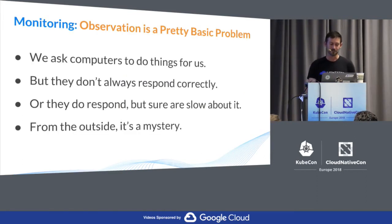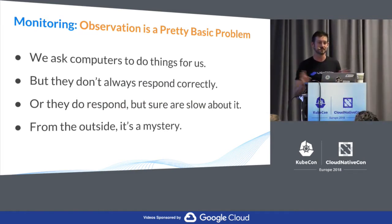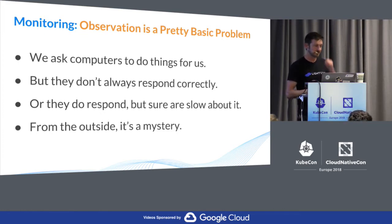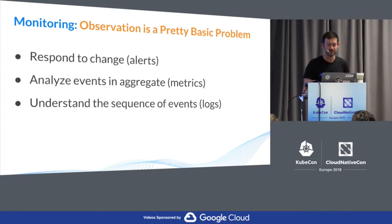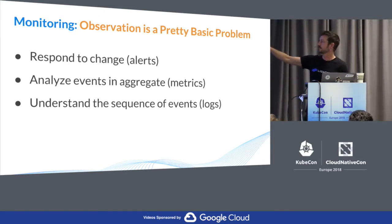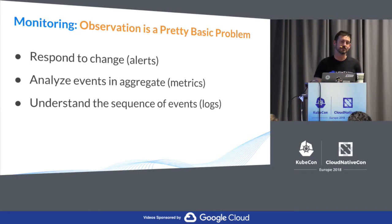So real quick, what is distributed tracing? Well, distributed tracing is just monitoring. There's nothing different, nothing new. All it is is monitoring — computers are doing things and we want to know what they're doing. You're never doing anything more than this when you're monitoring: there's a sequence of events you're trying to put together, you're trying to analyze those events in aggregate, which is basically metrics, and then you want to set alerts and SLAs based on those aggregated events.